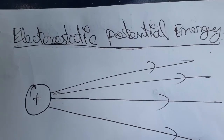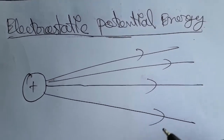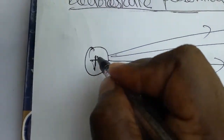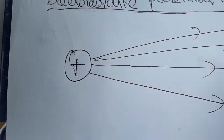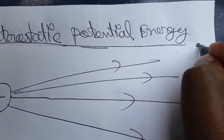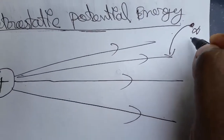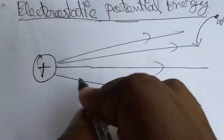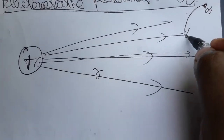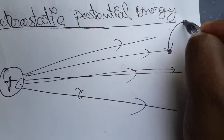Hello students, today we are going to see electrostatic potential energy. When we take a positive charge, the electric field will be outwards. I am bringing a unit positive charge from infinity to one point inside the electric field — from infinity to a point at some distance r.